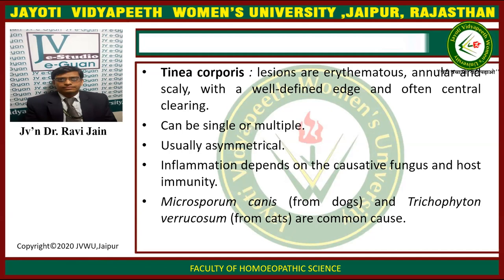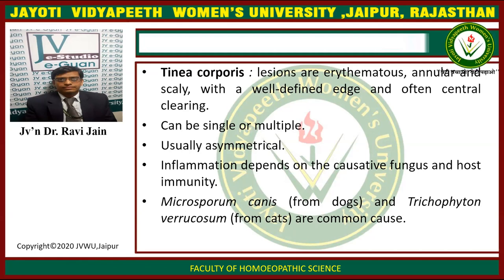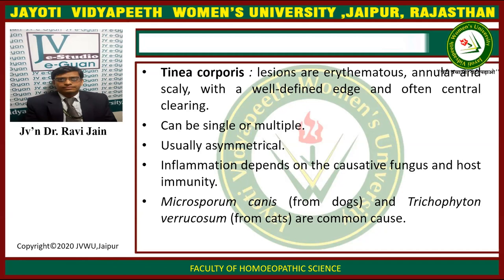Tinea corporis: The lesions are erythematous, annular and scaly with well-defined edge and often central clearing. It can be single or multiple and usually asymmetrical. The inflammation depends on the causative fungus and the host immunity. Microsporum canis from dogs and Trichophyton verrucosum from cats are common causes.